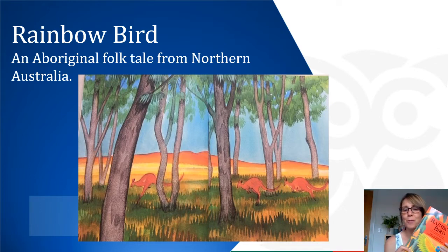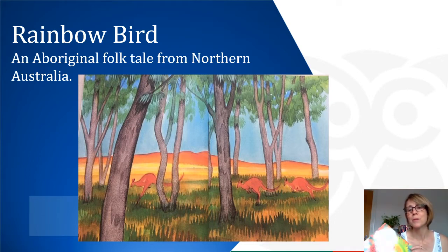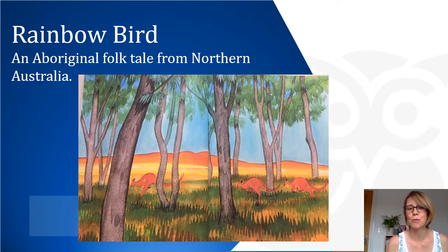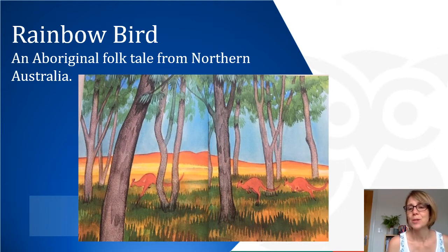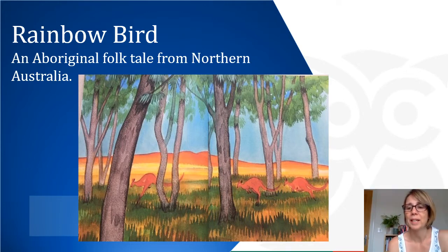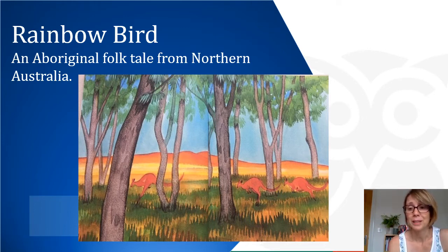Today we're going to start working on our story The Rainbow Bird, which is a reasonably simple story compared to some we've looked at, but it's quite a classic format — a folk tale, almost like a myth, that has been passed down for thousands and thousands of years. This story comes from northern Australia, from the Aborigines who've always lived in that area. Think about what you already know about Australia and about Aborigines. I'm going to read the story to you, and then we're going to make a story map so that we can actually tell the story to somebody else without reading it.